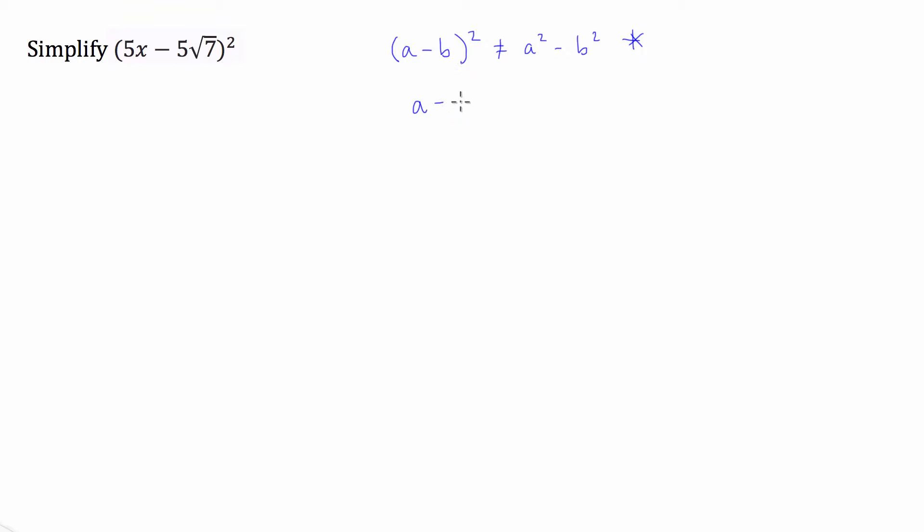This will equal, if we have a minus b all squared like this, this will equal a minus b times a minus b. So this is not correct. This is what you need to do.